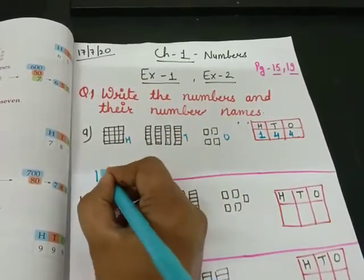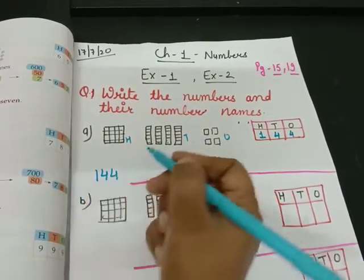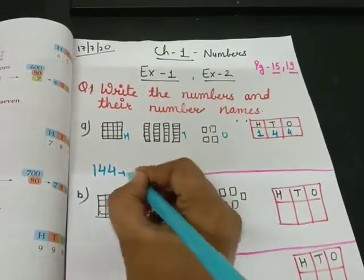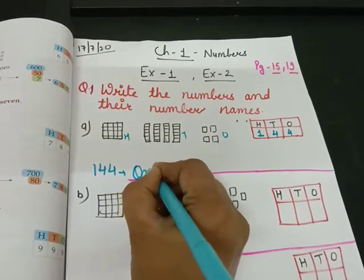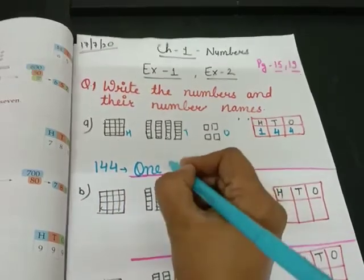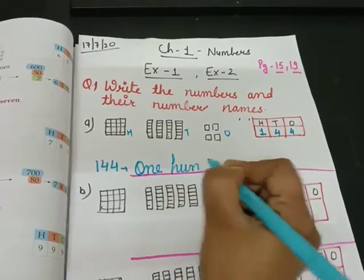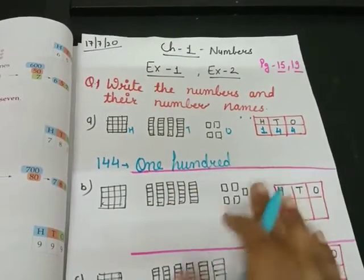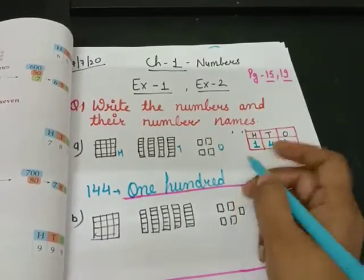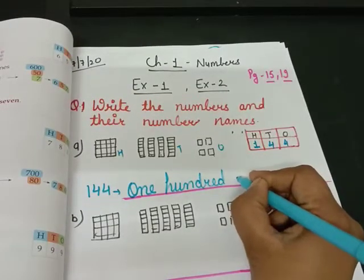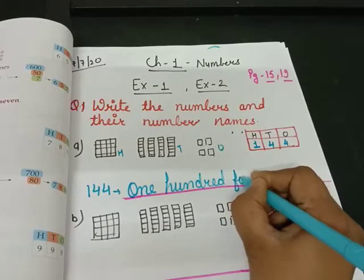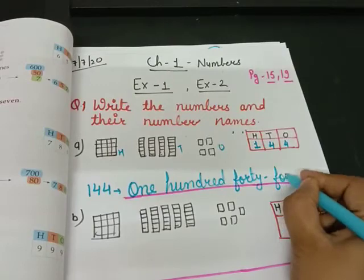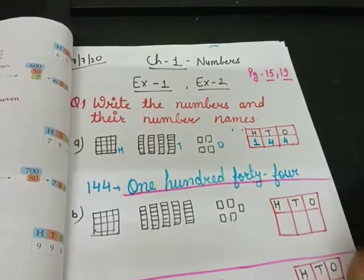Again, you have to write one hundred forty-four. How can we write it? How many hundreds are there? One. Write one hundred. Forty — F-O-R-T-Y. Forty-four.